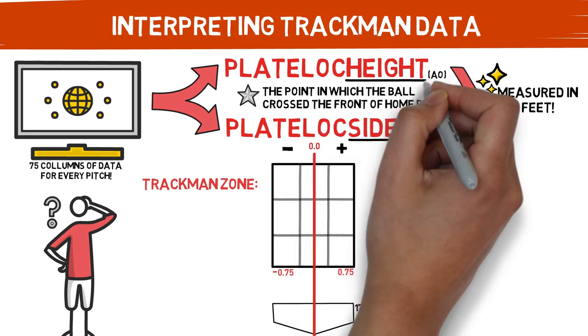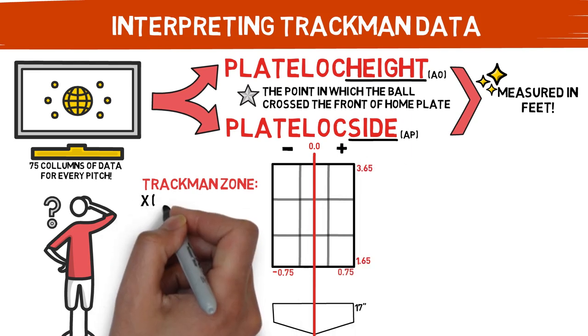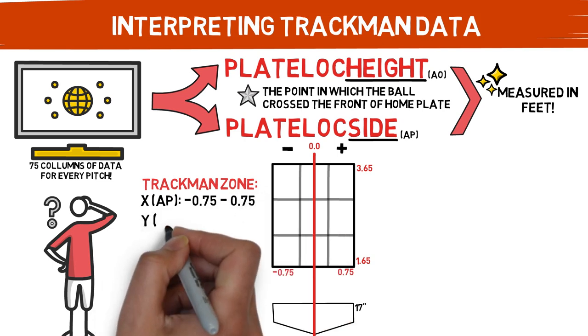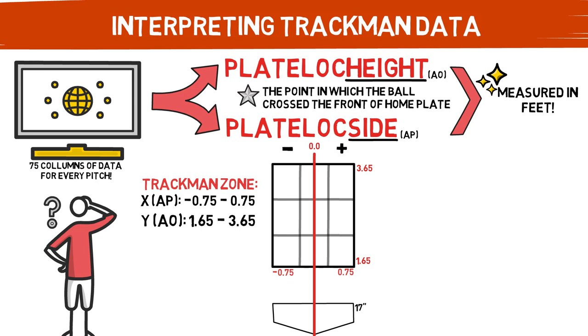Now onto plate-loc height. This statistic is not as exact as plate-loc side because of players varying heights and batting stances, but the official TrackMan zone takes the average player's height and sets the bottom of the zone at 1.65 feet off the ground and the top of the zone at 3.65 feet. It is possible to customize this variable to each of your hitters depending on their heights, but I found that these numbers work quite well as an average when evaluating catchers and umpires.